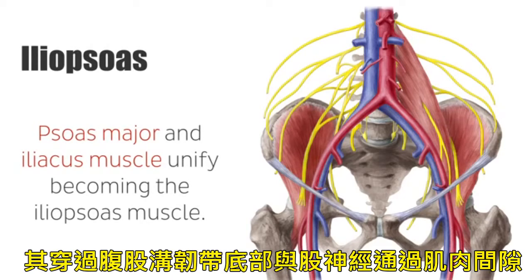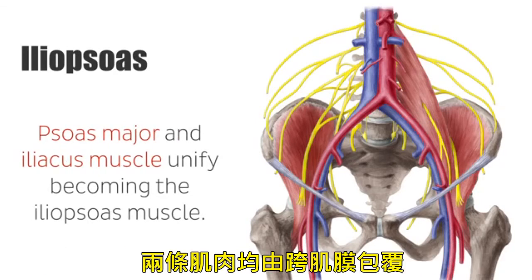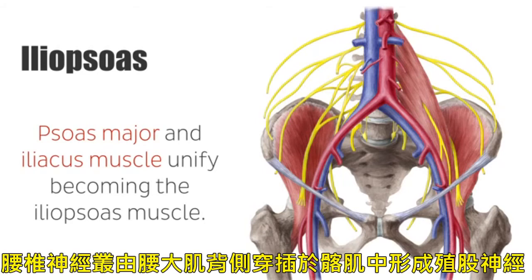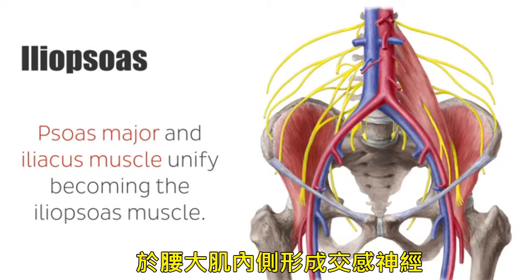There they pass below the inguinal ligament through the muscular lacuna together with the femoral nerve. Both muscles are completely surrounded by the iliac fascia. The lumbar plexus lies dorsally from the psoas major muscle, which is penetrated by the genitofemoral nerve. Medially from the psoas major runs the sympathetic trunk.